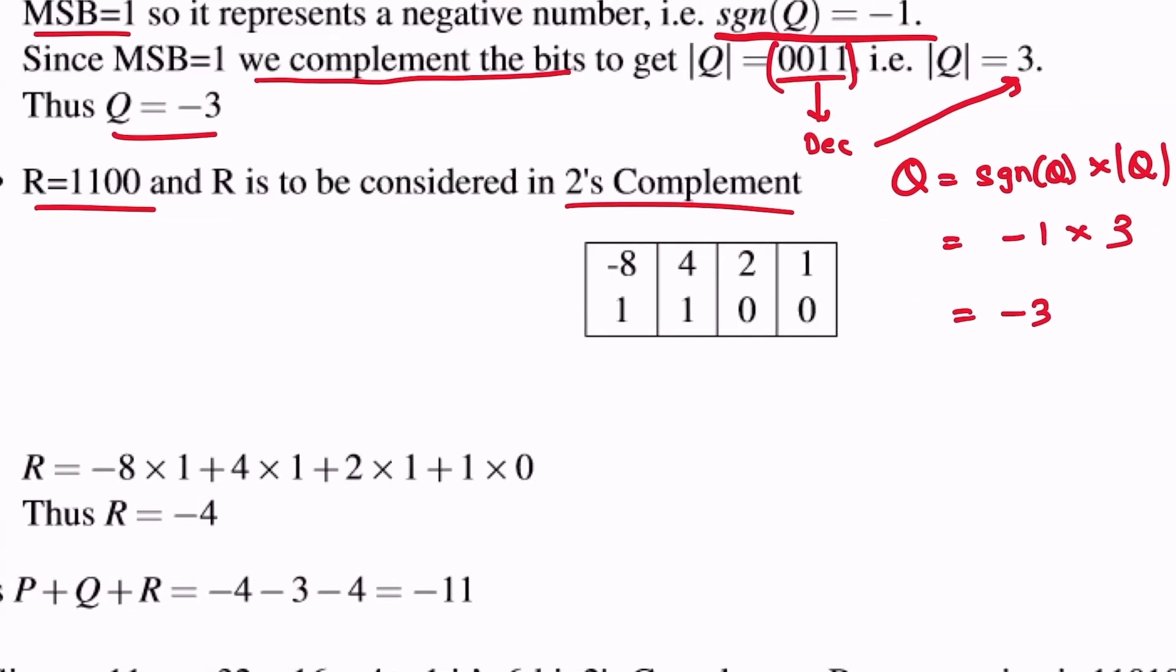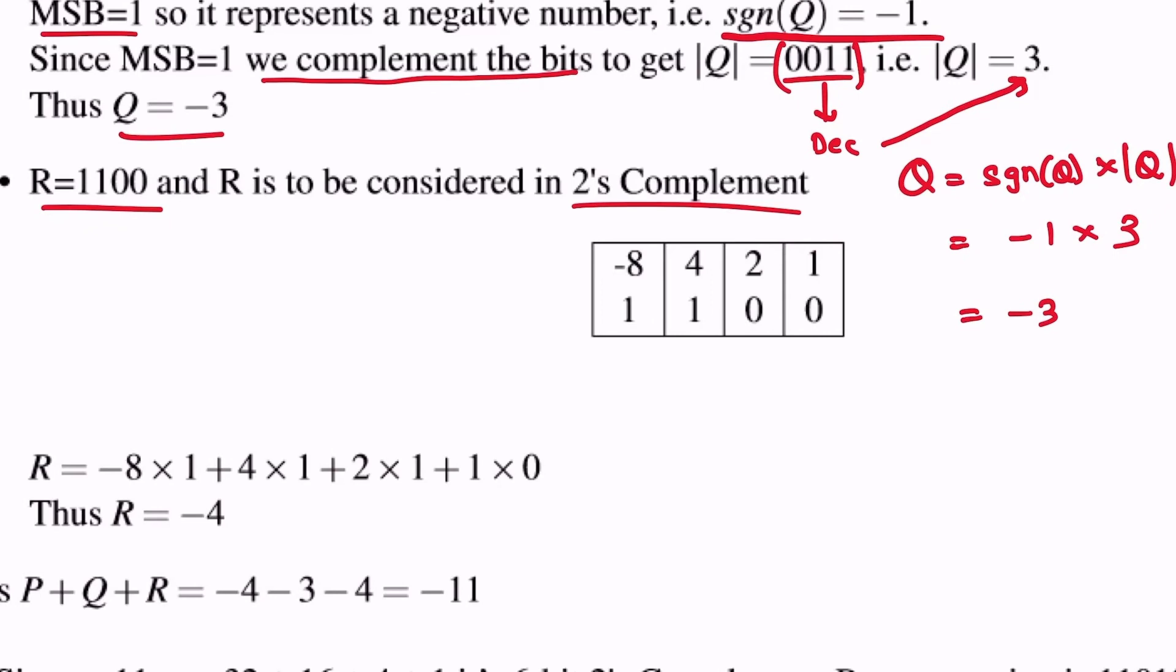Now two's complement is extremely straightforward in that each bit represents a binary weight, except that the MSB represents the binary weight in the negative value.